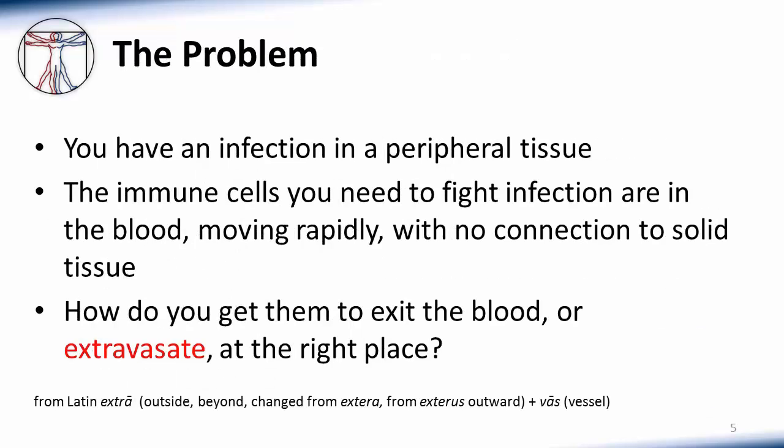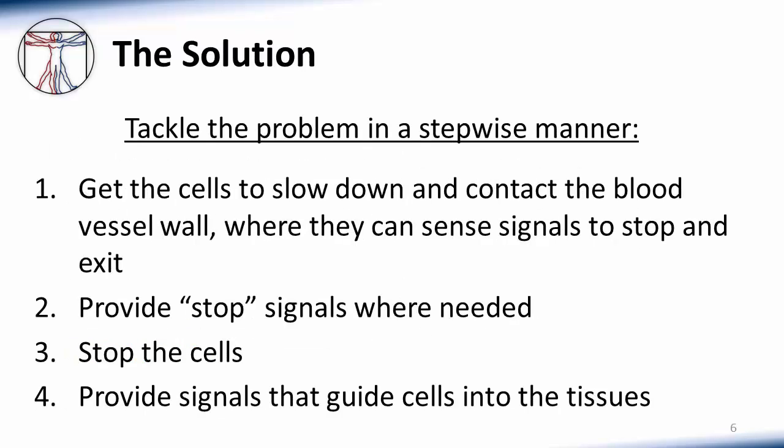During inflammation, cells need to move out of the blood and into specific tissues. This presents a problem in that cells in the blood are zipping along at high speed like they are on the interstate. How do you get them to exit the blood, or extravasate, in the right place? The body has solved this problem by breaking it down into four simpler steps. First, get the cells to slow down and contact the blood vessel wall, where they can sense signals to stop and exit.